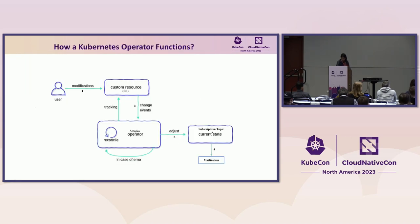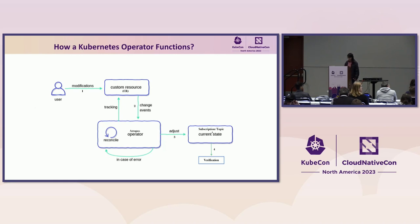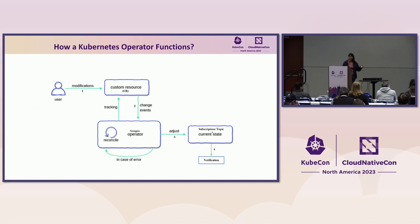Before moving to the challenges we encountered, here's how a custom operator works: as a user, I create a YAML file acting as my custom resource. The operator has a reconciliation loop that keeps reading for updates to this CR and tries to make the actual state match the desired state, with verification steps we'll discuss in later slides.